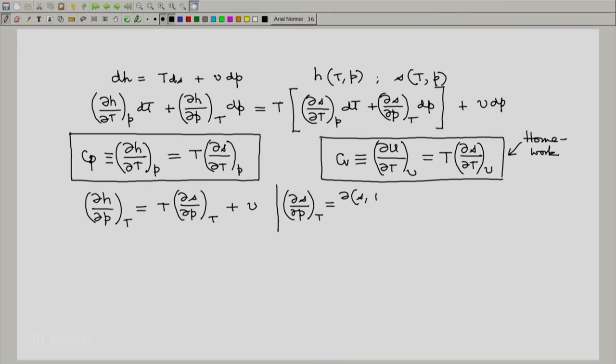We have partial of S with respect to P at constant T in Jacobian form as Jacobian of SP with respect to PT. We multiply by Jacobian of VT with respect to TS which equals 1. Since numerator and denominator terms are similar, we cancel to get Jacobian of VP with respect to PT.